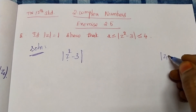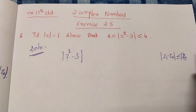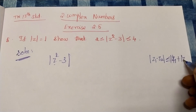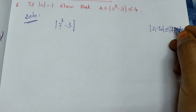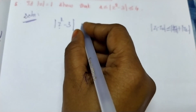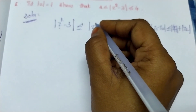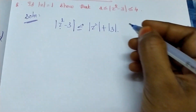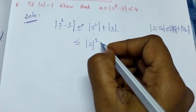Modulus of z1 minus z2 is less than or equal to mod z1 plus mod z2. Modulus of z1, modulus of z2. Mod z squared minus 3 plus mod 3. Mod z2 is the whole square.